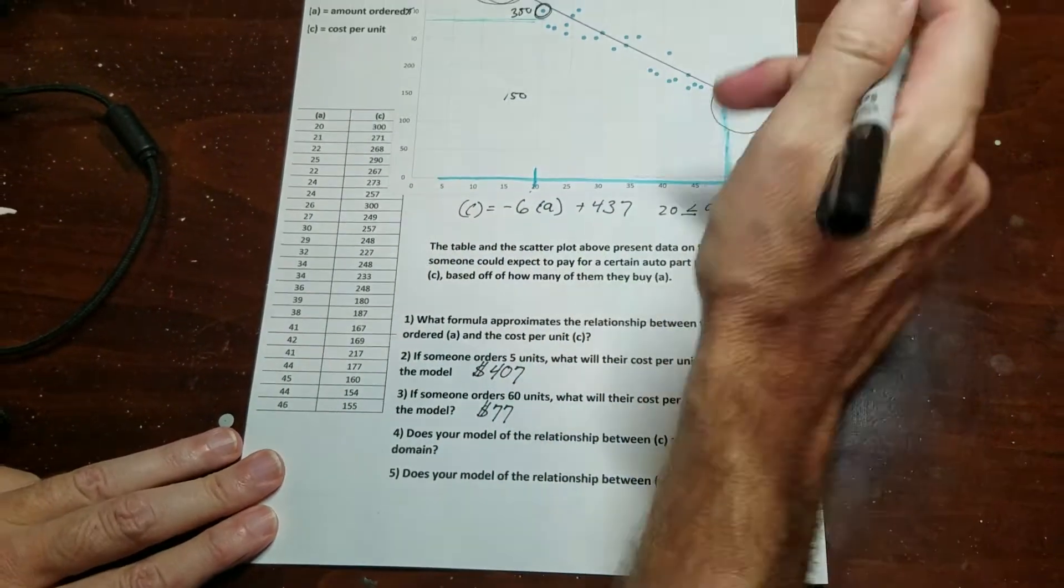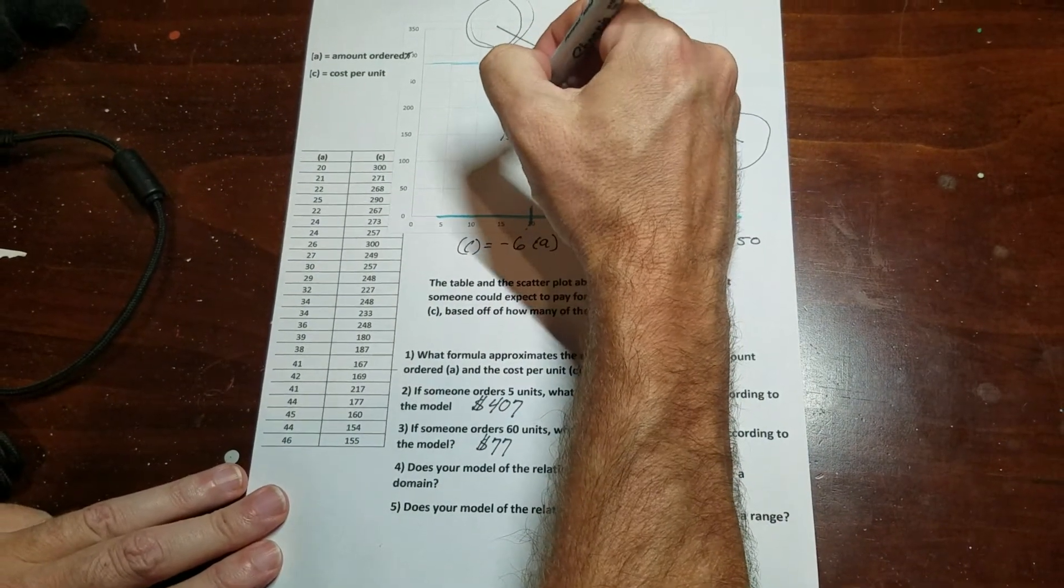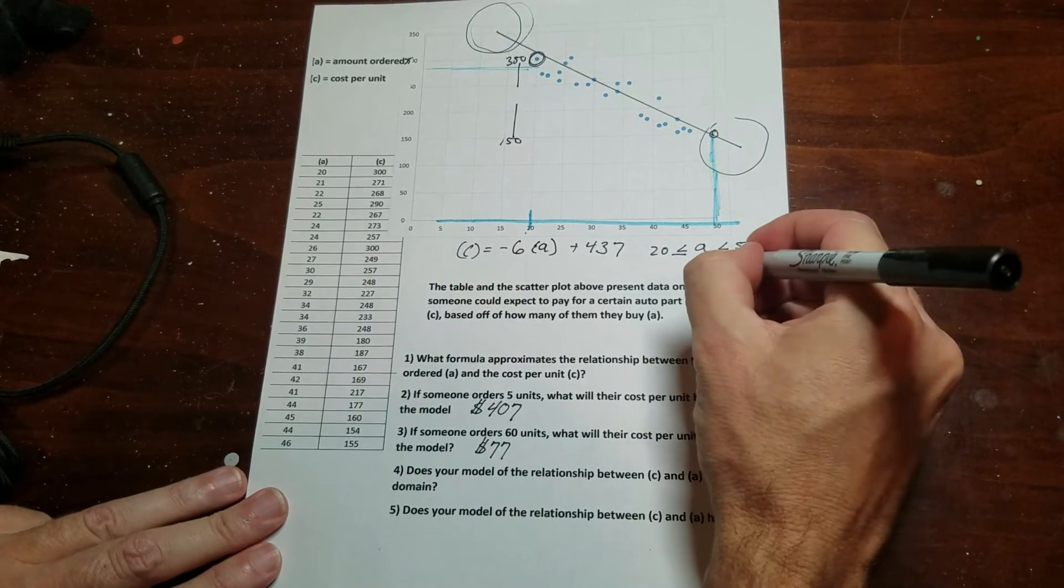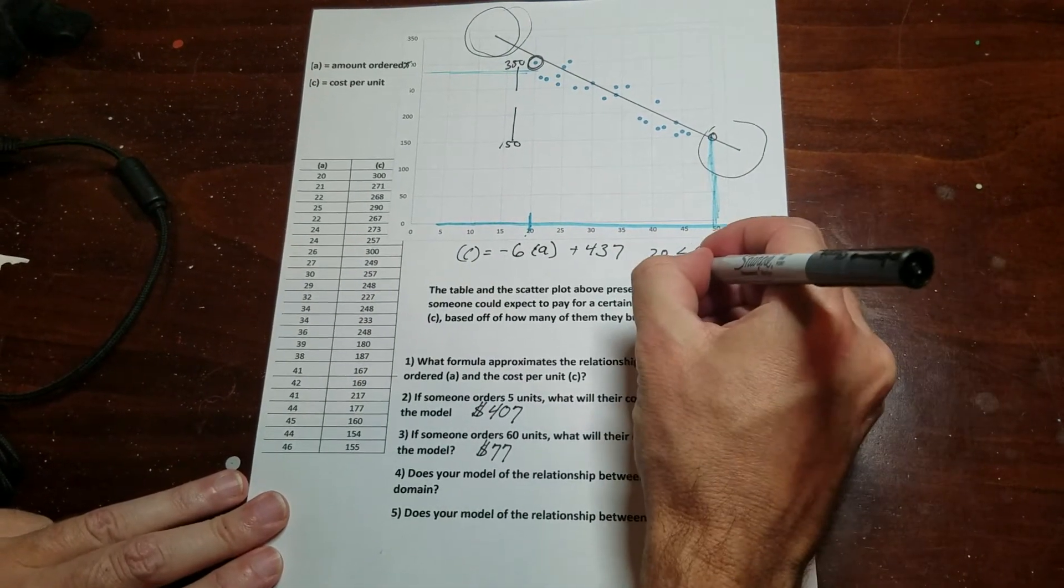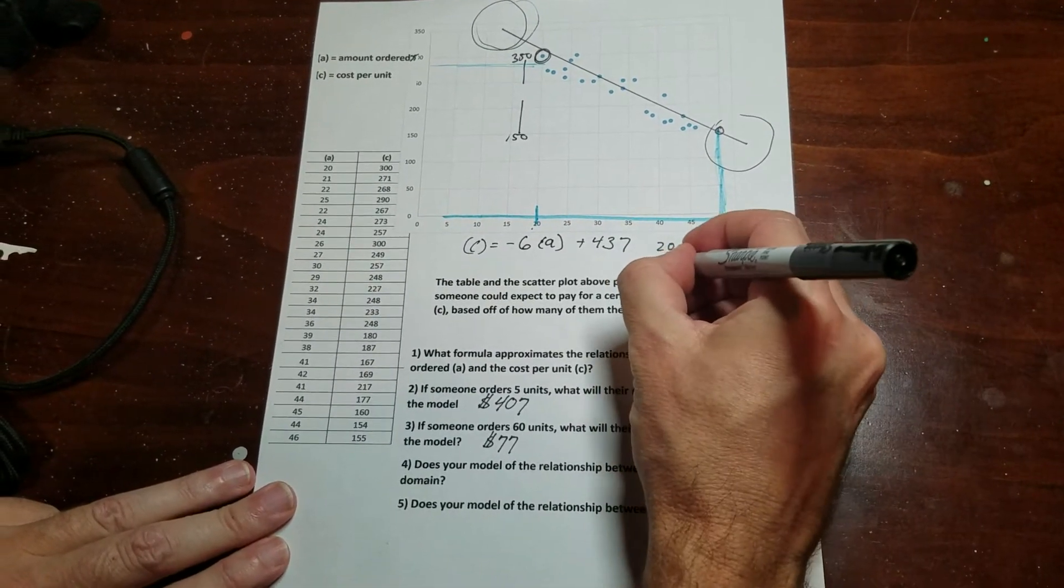So all of this data is between 350 and 150. So I can write that out. You have 350 on the high end and 150 on the low end.